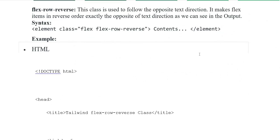Flex Row Reverse. This class is used to follow the opposite text direction. It makes flex items appear in reverse order, exactly reversing the position of the text direction as we can see in the output. Syntax: element class with 'flex flex-row-reverse', contents, element closing tag.